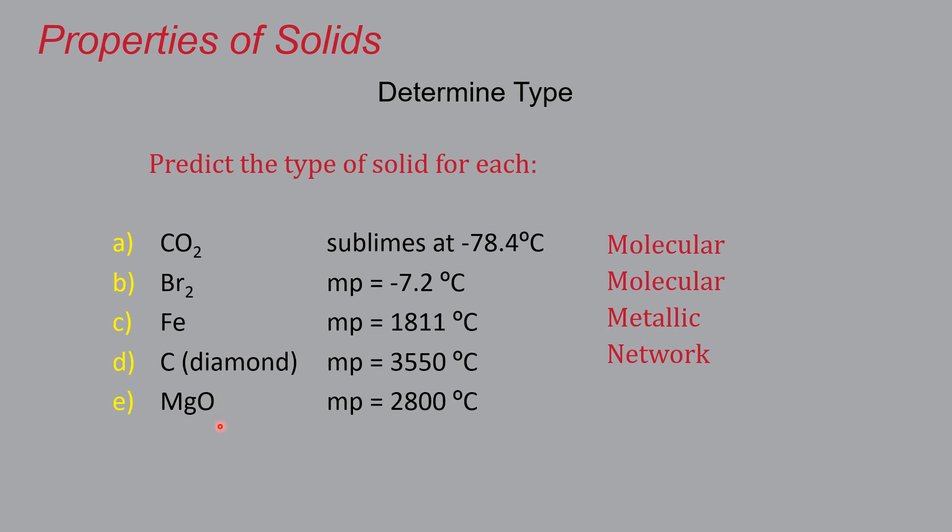And last but not least, magnesium oxide. So this is a metal, non-metal pairing, a very strong indicator of an ionic compound, which would make it an ionic solid. And the very high melting point of 2800 degrees also backs that up. So that is probably an example of an ionic compound.